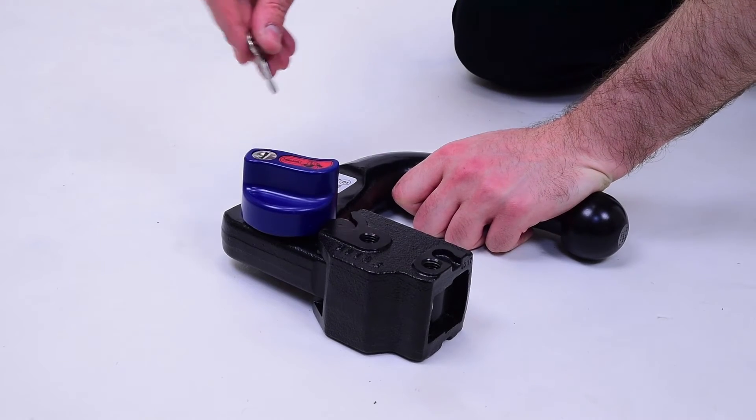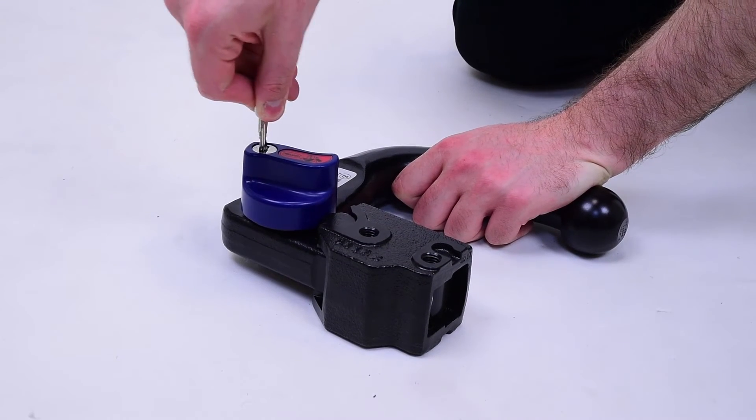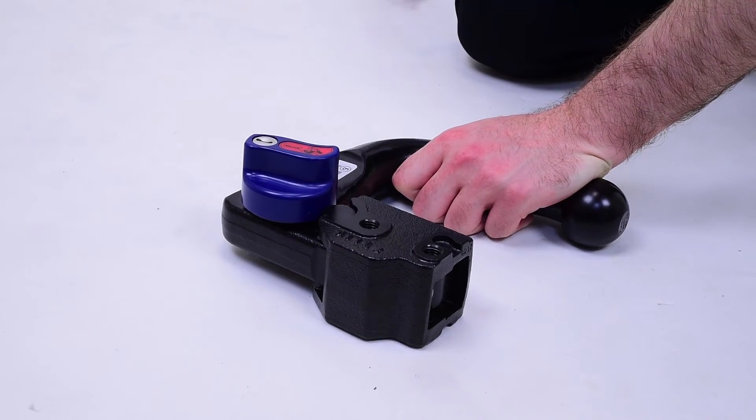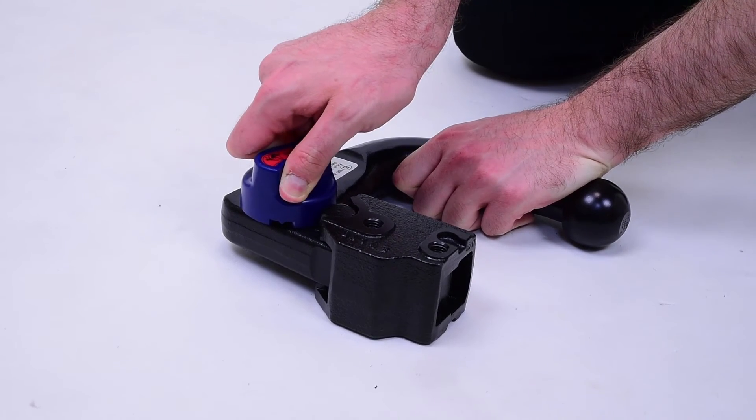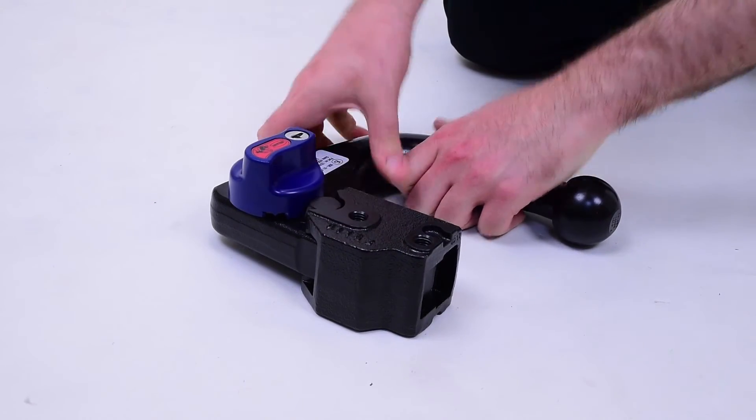To remove the neck, make sure it is unlocked. Then push down hard and turn the blue locking knob 90 degrees and take the neck off carefully.